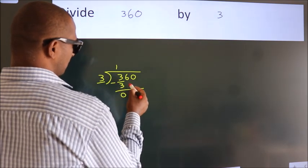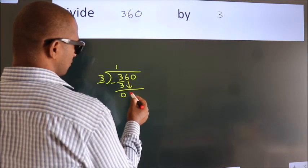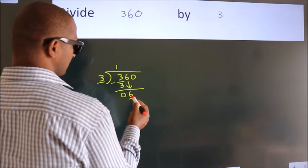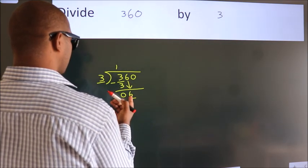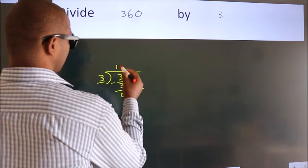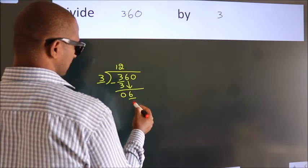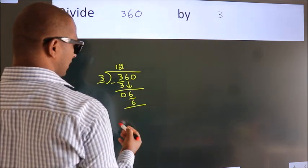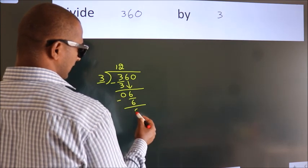After this, bring down the beside number. So, 6 down. So, 6. When do we get 6? In 3 table, 3 2s, 6. Now, we subtract. We get 0.